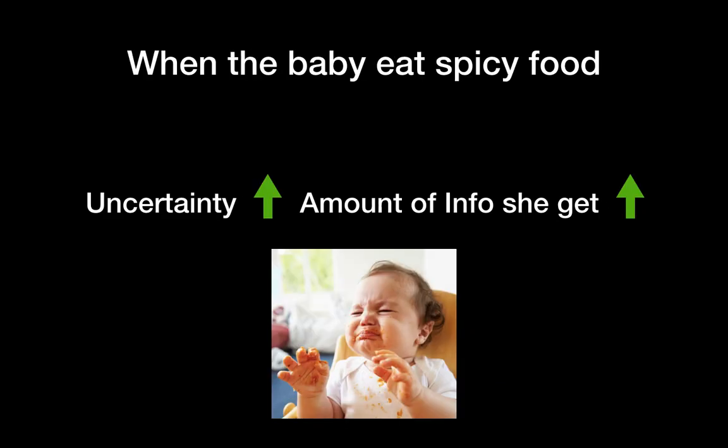What if the baby eats spicy food? The spicy food is rare input to her and she is uncertain about it. Once she has spicy food, which is uncertain input, she will get various information such as spicy taste, spicy smell, texture, and color.